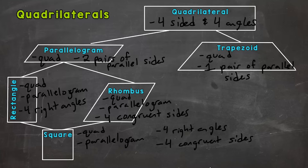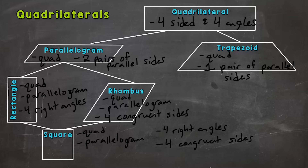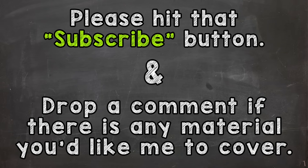So those are the different types of quadrilaterals. There are some other ones, but these are the main ones we cover in fifth grade, and this gives you an idea of how they differ and how we get more specific as we work our way down the chart. Now we're going to head over to the mastery check — link is in the description — where you'll classify some quadrilaterals on your own. Use your notes from the chart, and I'll see you over at the mastery check. Thanks for watching!